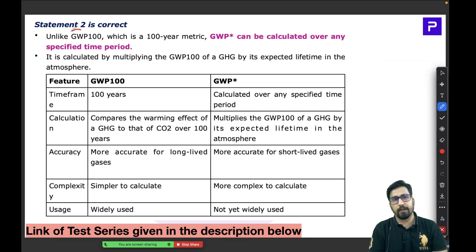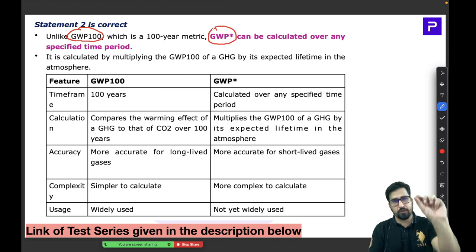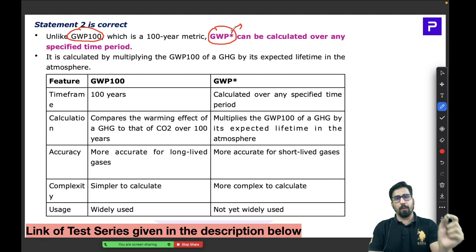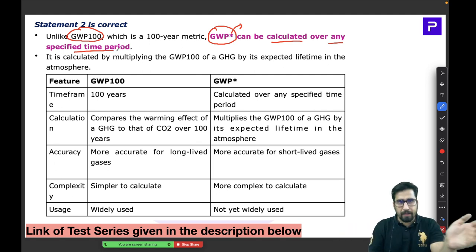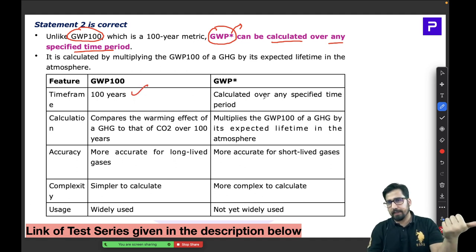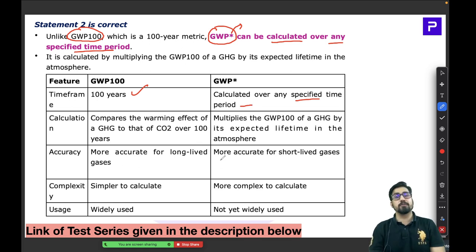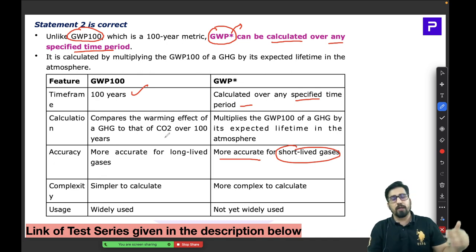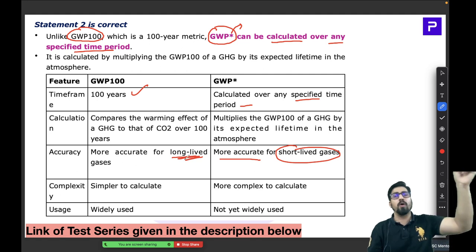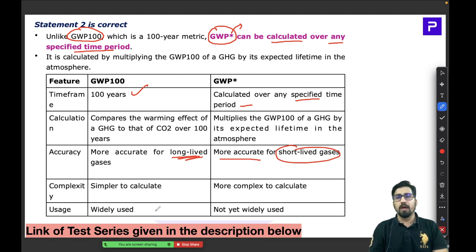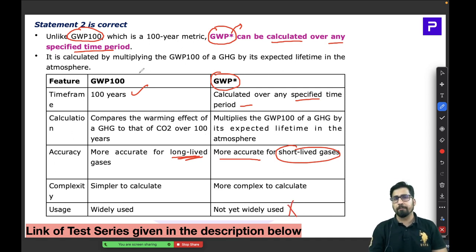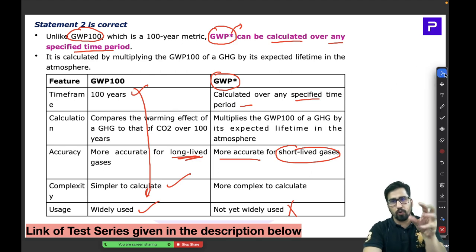There is also another unit called GWP* (GWP with an asterisk). Unlike GWP-100, this is not calculated for a specific time period — it can be calculated over any specific time period, making it more accurate for short-lived gases. GWP-100 focuses majorly on long-lived gases. However, because GWP* is very specific in nature, it is not widely used, whereas the 100-year standard frame is widely used and simpler to calculate.